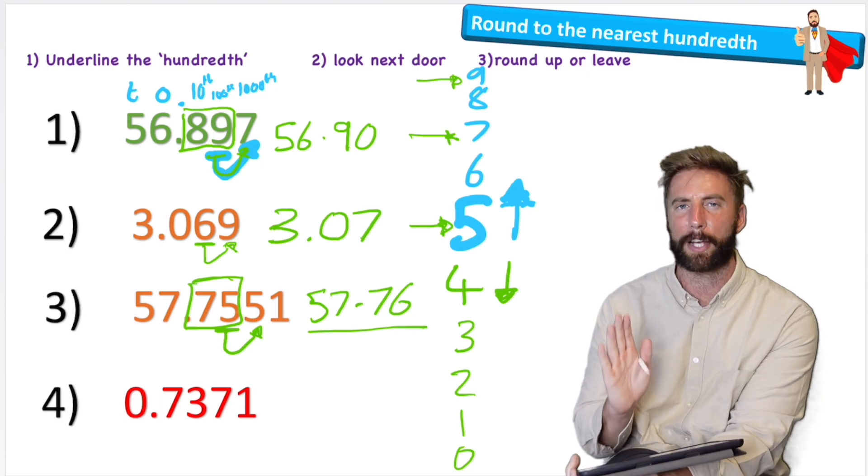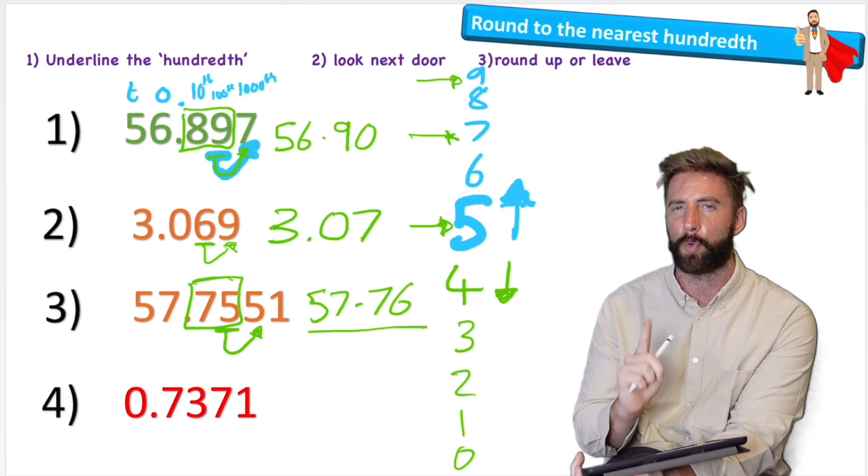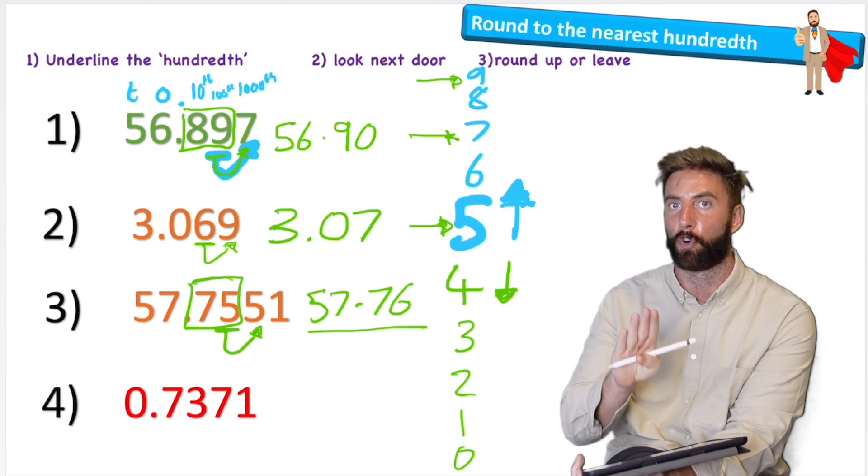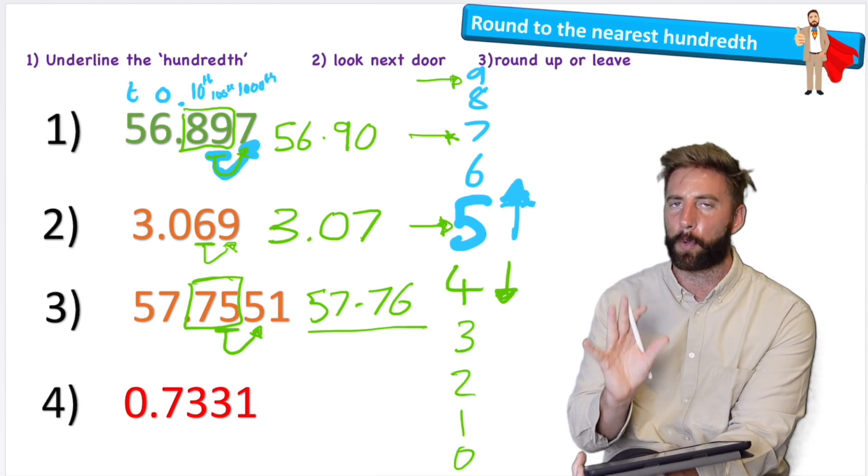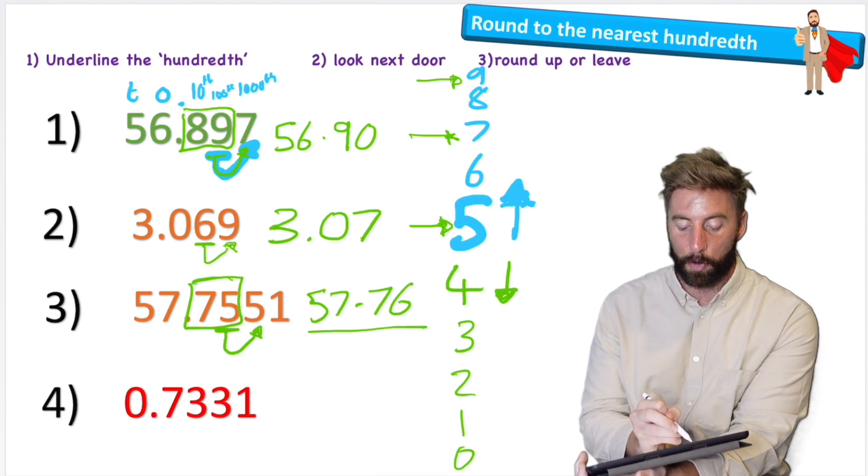Okay, question four. I'm actually going to change really quickly because I want to show you what happens if we have to four or less. Okay, there we go, made a quick change.